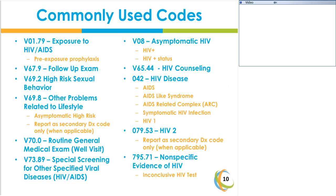Here is a list of the commonly used diagnoses to report HIV and AIDS care. V01.79 is used for exposure and pre-exposure. V67.9 is the follow-up exam code. V69.2 reflects high-risk sexual behavior. V69.8 is used to report other problems related to lifestyle, such as asymptomatic high risk, and is only reported as a secondary diagnosis. V70.0 is your routine general medical exam, also known as the well visit, preventive exam, or annual exam.